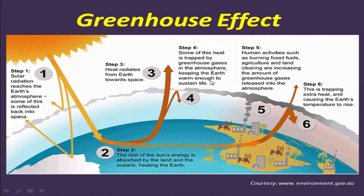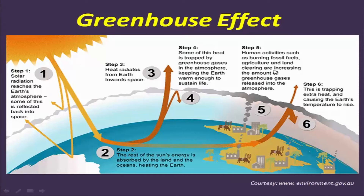Heat is reflected back by the greenhouse gases. Additionally, humans induce an extra heat component through activities such as burning fossil fuels, burning agricultural land, clearing land surfaces, and deforestation — all of which are increasing the amount of greenhouse gases. This increases greenhouse gases in the atmosphere, trapping extra heat and causing the earth's temperature to rise.